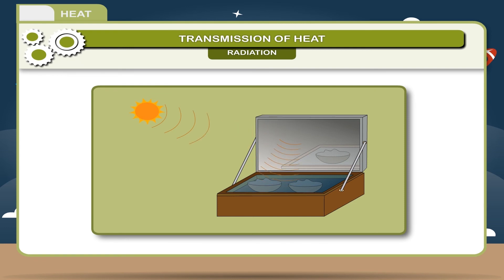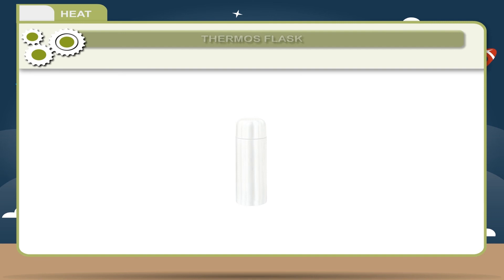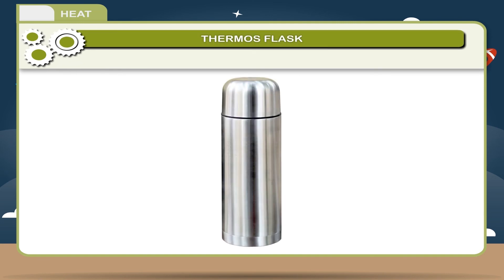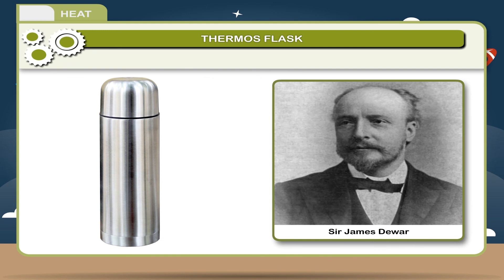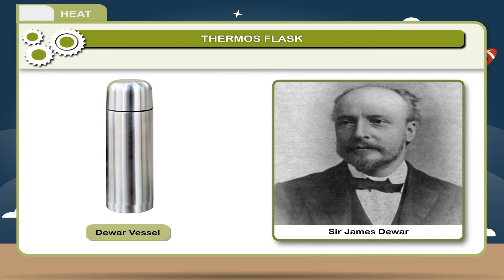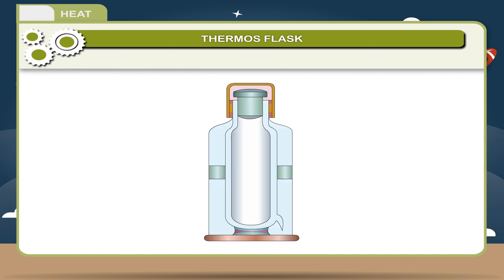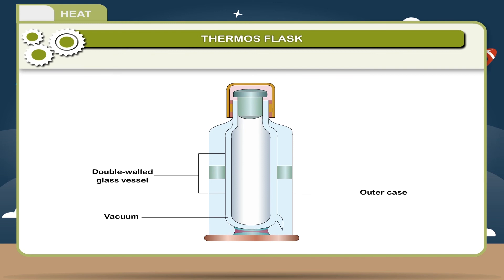Thermos flask: a thermos flask is a special type of bottle which keeps hot substances hot and cold substances cold for a long time, also called a vacuum flask. It was invented by Sir James Dewar. Construction: the thermos flask consists of a double-walled glass vessel having a vacuum between the walls. The bottle is placed in a metallic case with non-conducting materials like cork or sponge in between. The outer surface of the inner wall and inner surface of the outer wall are silvered, and the mouth is fitted with a cork stopper.